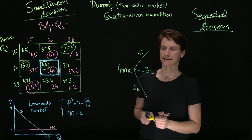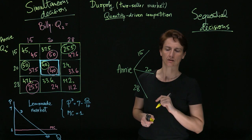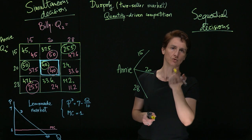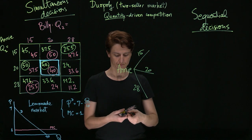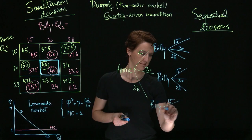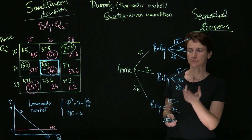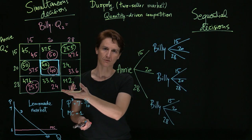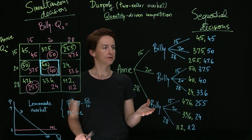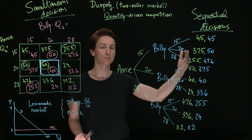So we will first say that Annie decides how many glasses to produce, and in each possible state of the world, for each possible decision she makes, we will be able to think about what Billy would do in response. Their payoffs will be exactly the same as from the payoff matrix. I've filled in the decision tree, so now we can go ahead and analyze it. The way we'll do that is through backward induction — we're going to start by thinking about Billy's actions in each possible situation.